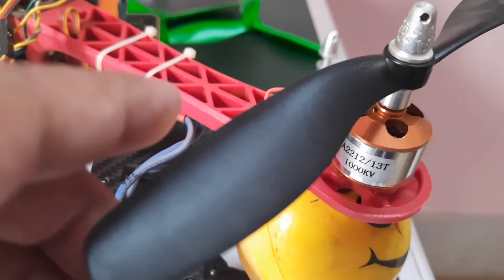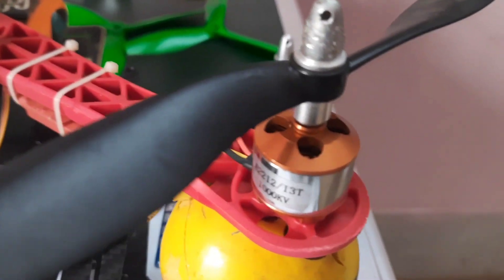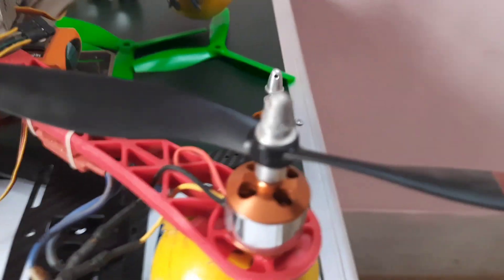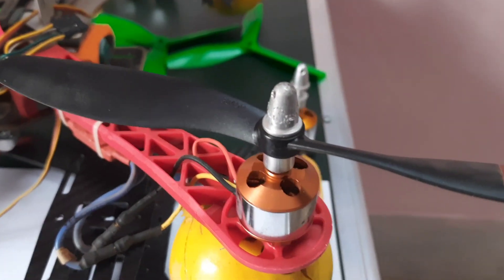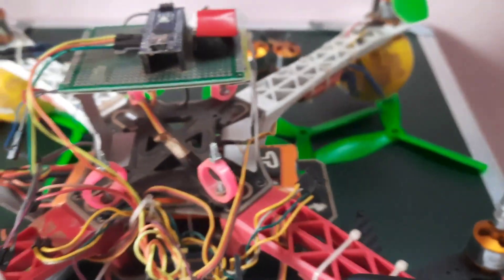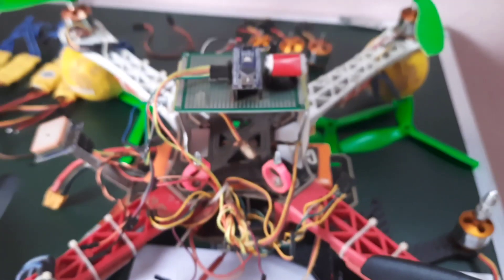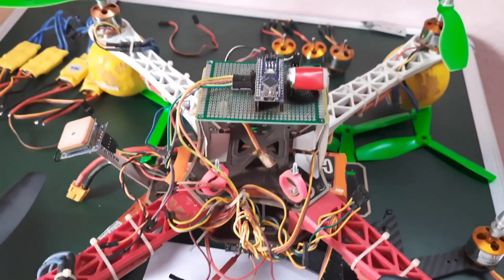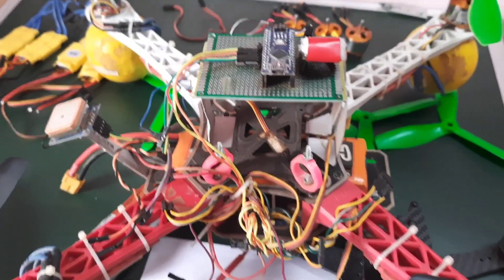Right now I'm using this 2212 motor, 1000 KV motor. These are very cheap - these are the cheapest in the market. That is what I am doing here - I am trying to use these motors to build the five inch drone. Let me remove this. So this was the original drone. I have removed the flight controller.